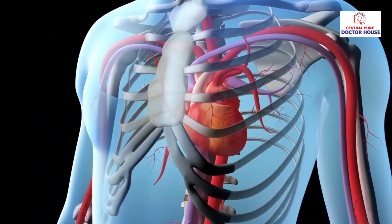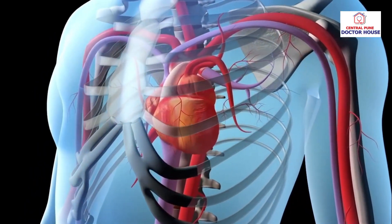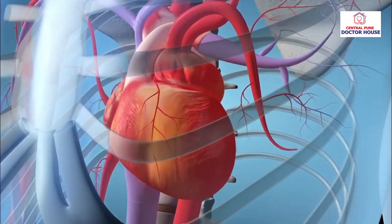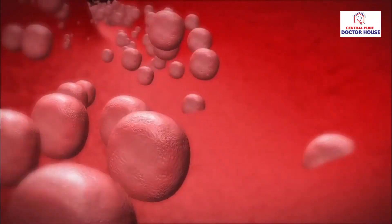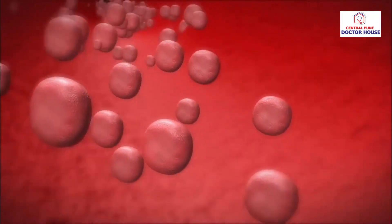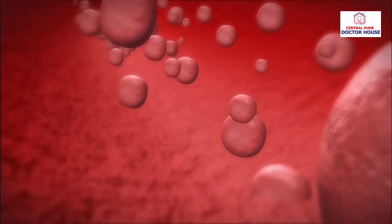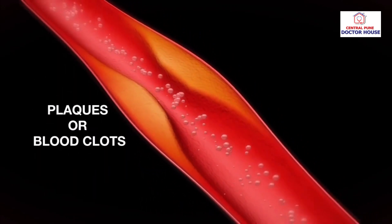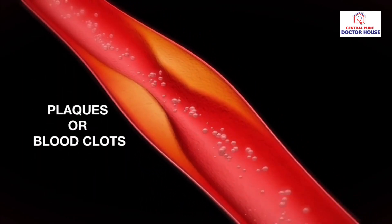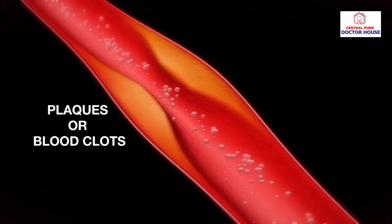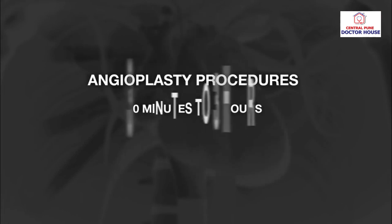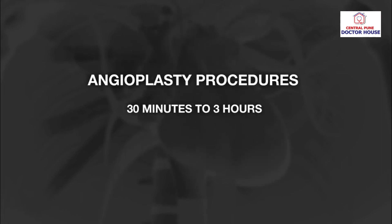Percutaneous transluminal or balloon angioplasty is a treatment procedure to restore blood flow in narrowed or blocked coronary arteries caused by plaques or blood clots. Most coronary angioplasty procedures last between 30 minutes to three hours.